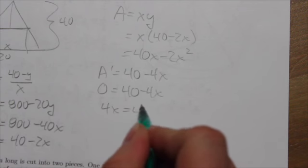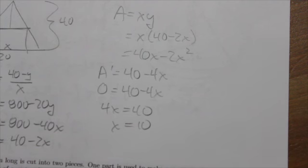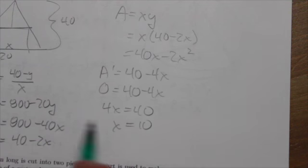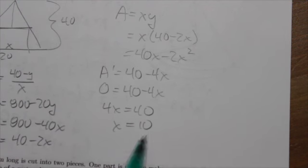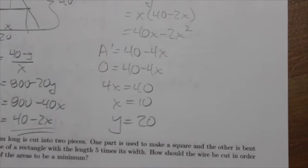And then we just got to solve for the variable x. Okay, and the question here is asking for the dimensions. So right away, we know that the base of the triangle is going to be 10. And then based on my expression for y, I can tell you right away that y is equal to 20. And those are the dimensions of the rectangle.